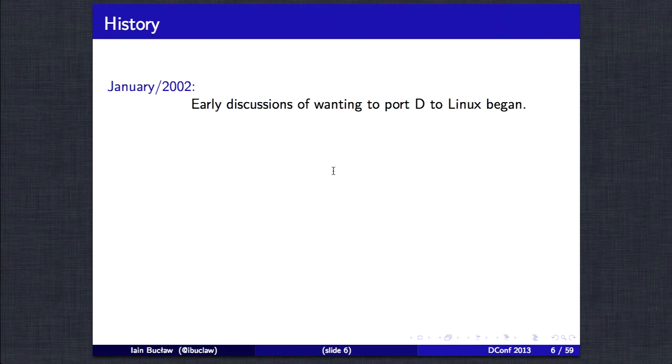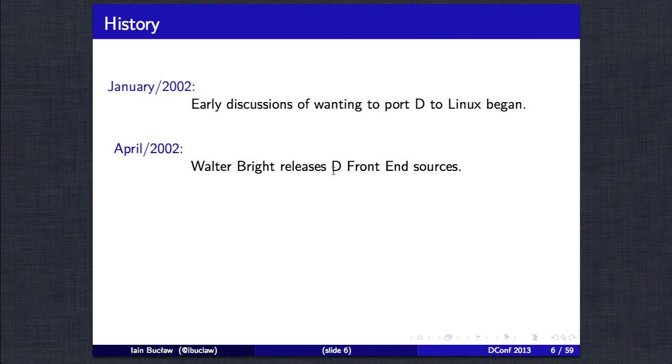It sort of started around about 2002 where at the time D was very much in its infancy. I think it only really supported Windows 32 bits and DMD was the only compiler out there and a lot of people voiced their opinions over hey it would be really cool if we get this onto Linux. But thankfully enough at around about April-ish time Walter actually released a portion of the frontend as open source. This was in a dual GPL artistic license and it contained the necessary lexical analysis, parser and semantic analysis which allowed people to take that and port it to their own backend.